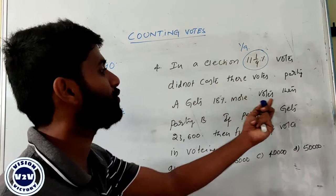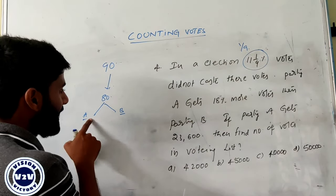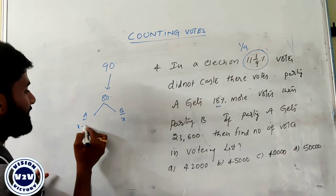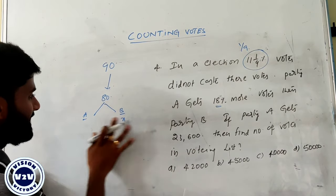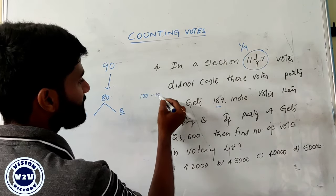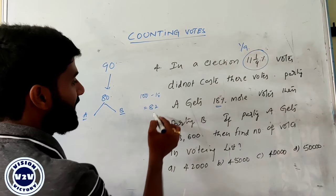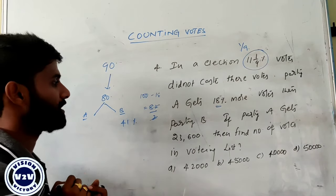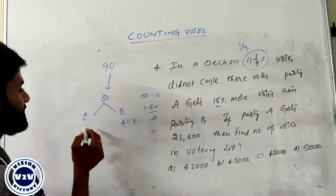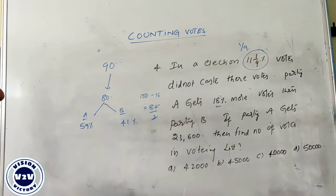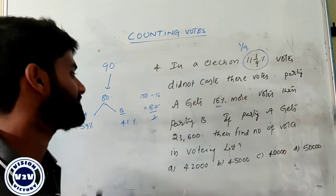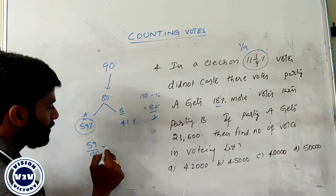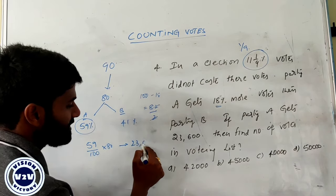Party A gets 18 percentage more votes than party B. If A and B are equal, each gets equal share, but since A gets 18 percentage more, B gets x and A gets x plus 18 percentage. So: 100 minus 18 equals 82, and 82 divided by 2 equals 41 percentage for B. A got 18 percentage more, so A gets 59 percentage. If party A gets 23,600 votes: 59 by 100 of 80 votes exactly equals 23,600.